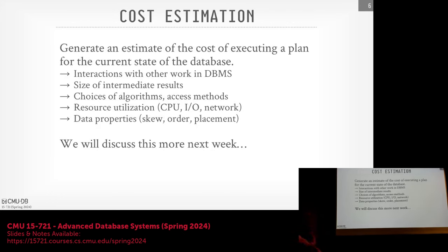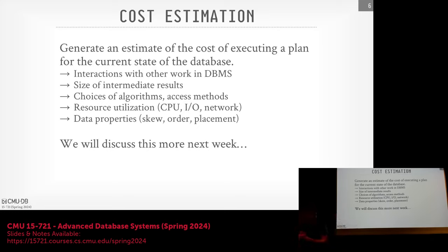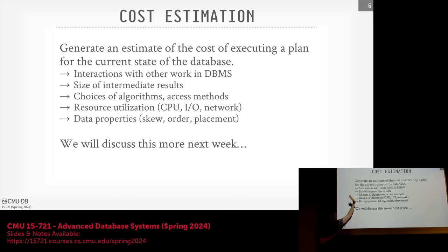Cost estimation is what we use internally to figure out whether one query plan is going to be better than another during our search process. It's a combination of metrics: how much data I think I'm going to read from disk, how much I'll spit out based on selectivity or cardinality, whether data is skewed or compressed, where it's physically located. But it's never going to be exactly perfect. The paper from the Germans shows that once you do two joins, all these estimates get way out of whack — the cost model is going to be woefully underestimating the number of tuples coming out, leading it to choose an incorrect plan.